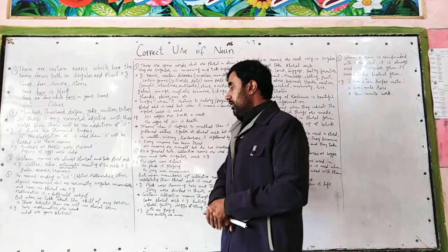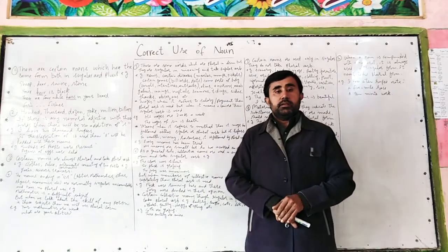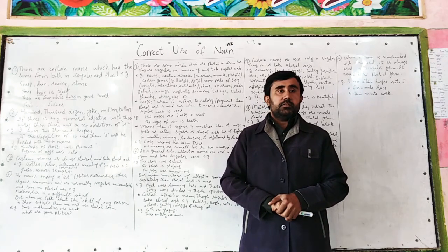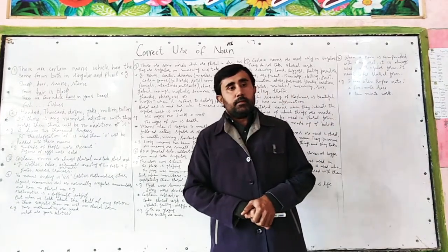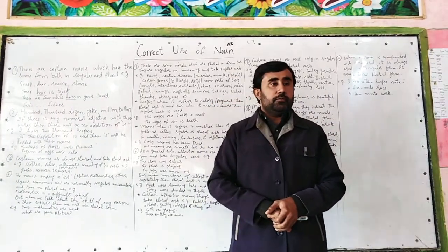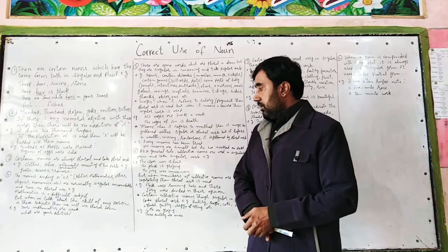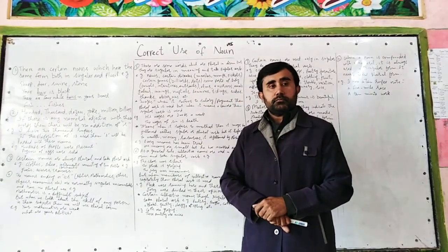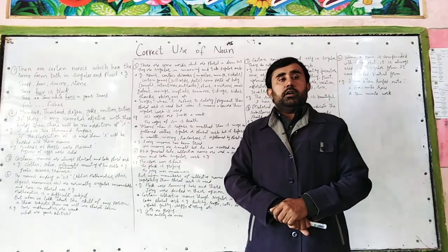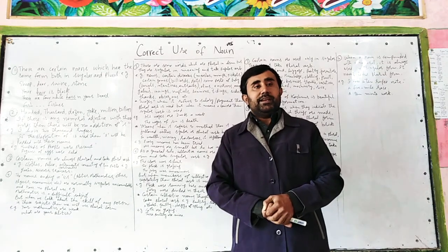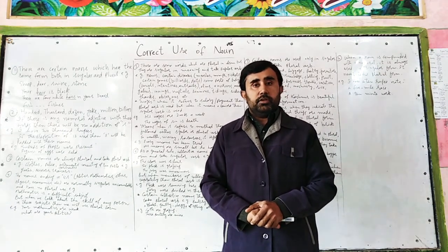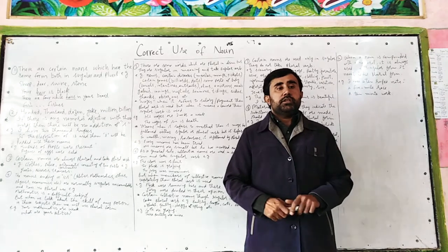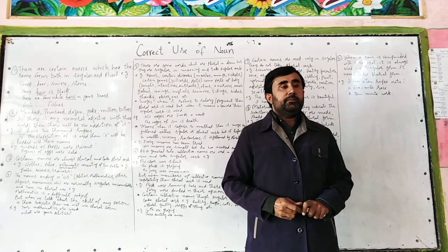But when we talk about the skill of a person — like politics, economics, mathematics — then we use plural form with these words. For example: 'What are your politics?' 'Your mathematics are weak.' When we take them as a subject, we use singular verb; but when we talk about the skill of a person, we use plural verb.